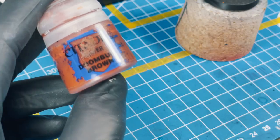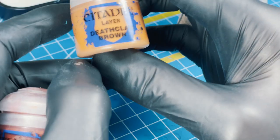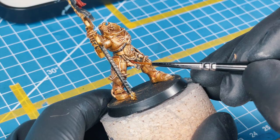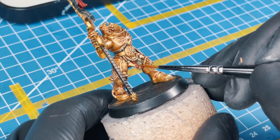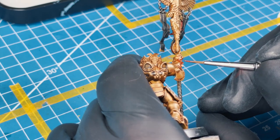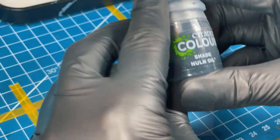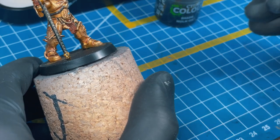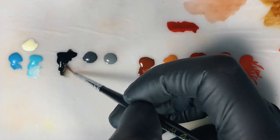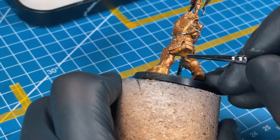Now it's time to paint some leather. Grab Doombull Brown and grab the Deathclaw Brown. Start with base coating all the leather parts using the Doombull Brown. Once you've base coated all the leather parts and it's fully dry, start applying Nuln Oil all over it.